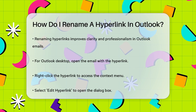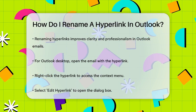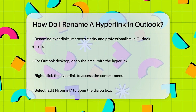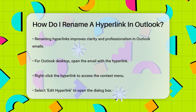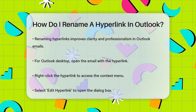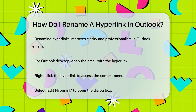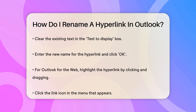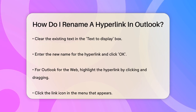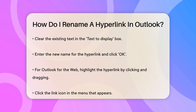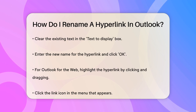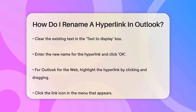If you're using the Outlook desktop application, start by opening the email that contains the hyperlink you want to rename. Right-click on the hyperlink to bring up the context menu, and then select Edit Hyperlink. This will open the Edit Hyperlink dialog box. Here you'll see a box labeled Text to Display. Clear the existing text and type in the new name you want for your hyperlink. Once you've entered the new text, click OK, and your hyperlink will now display the new name.